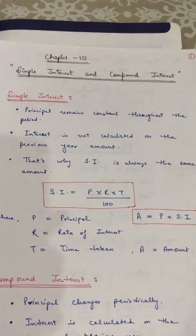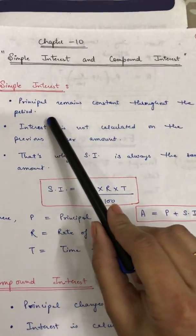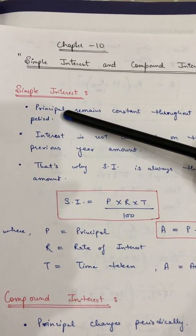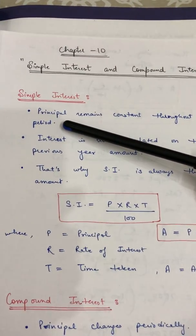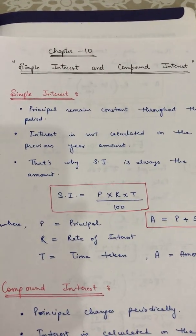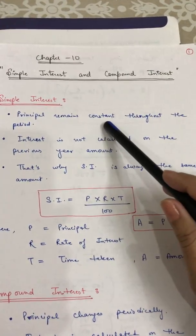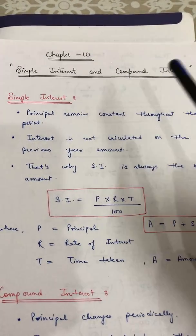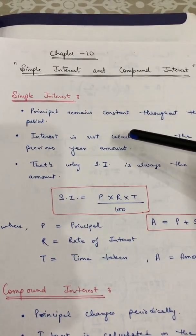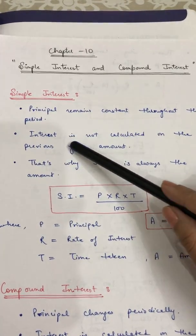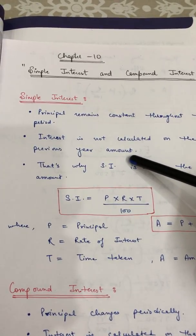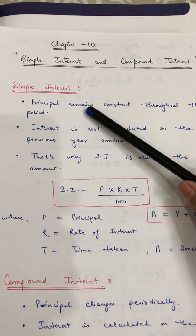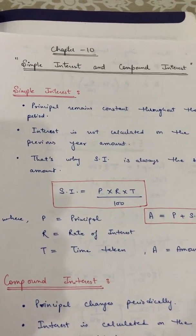There are two categories of interest: simple interest and compound interest. In simple interest, the principal remains constant throughout the period. The principal means whatever money you have borrowed — like 20,000, 50,000, or one lakh — that is the principal. It remains the same throughout the period. So if you borrowed money for five years, your principal stays the same for all five years. When calculating the interest each year, we calculate it on the same principal.